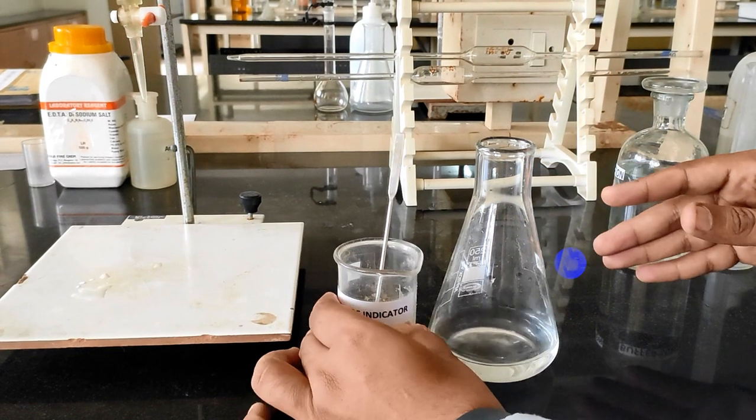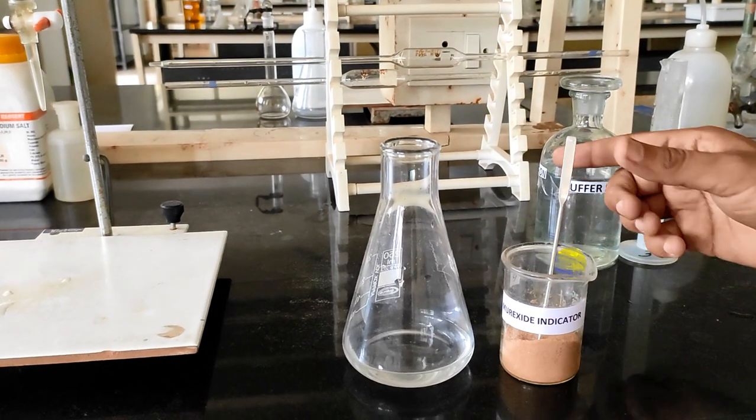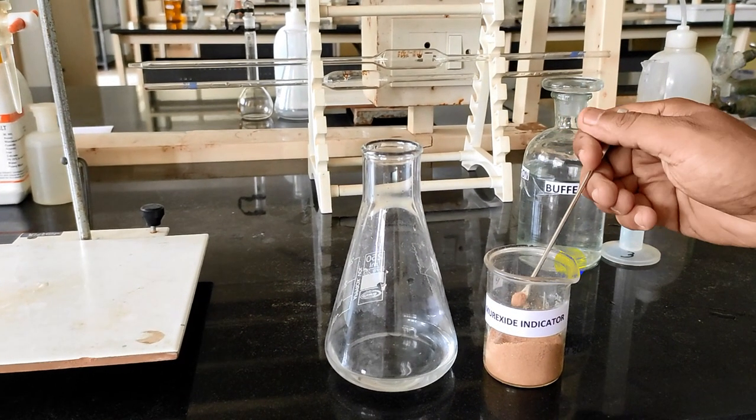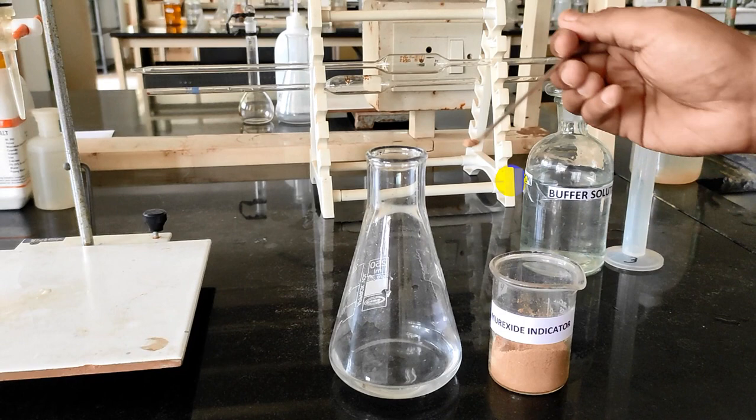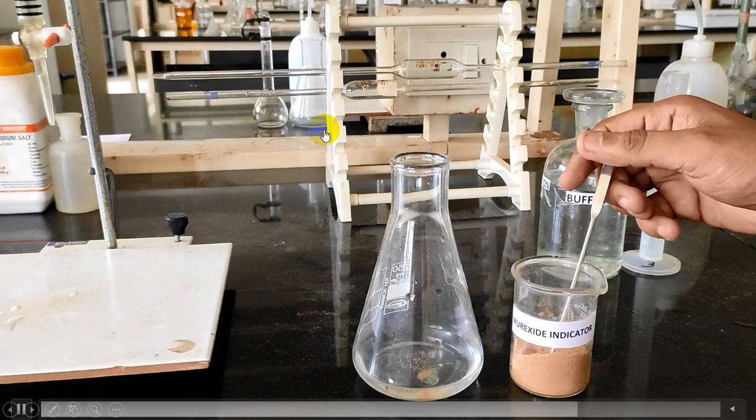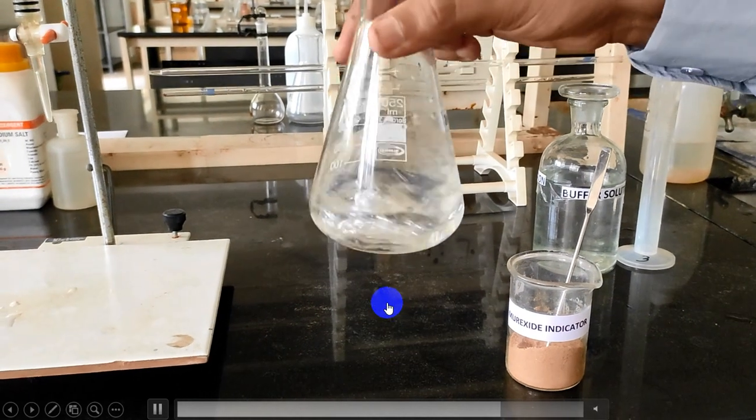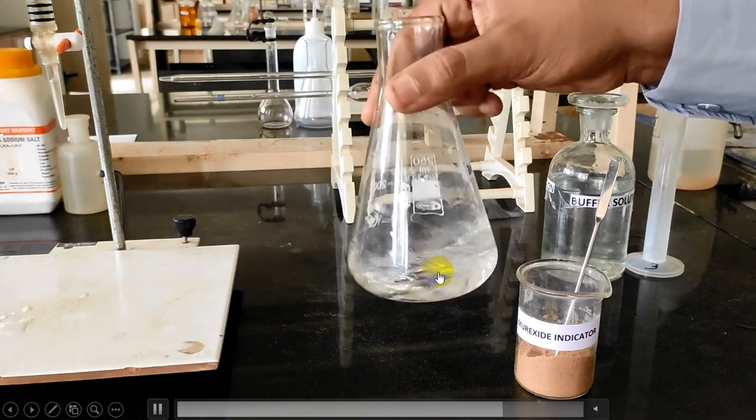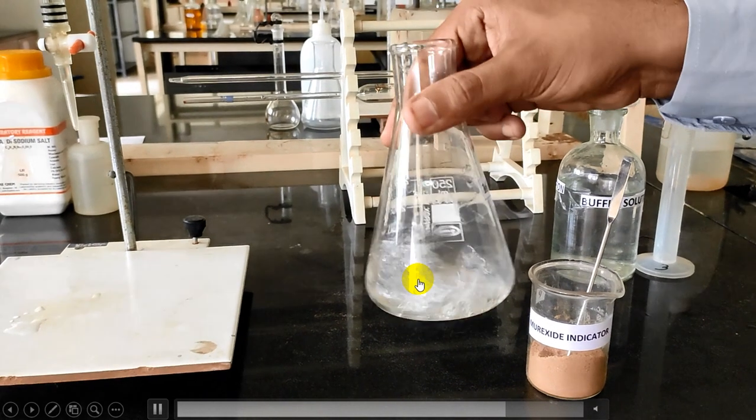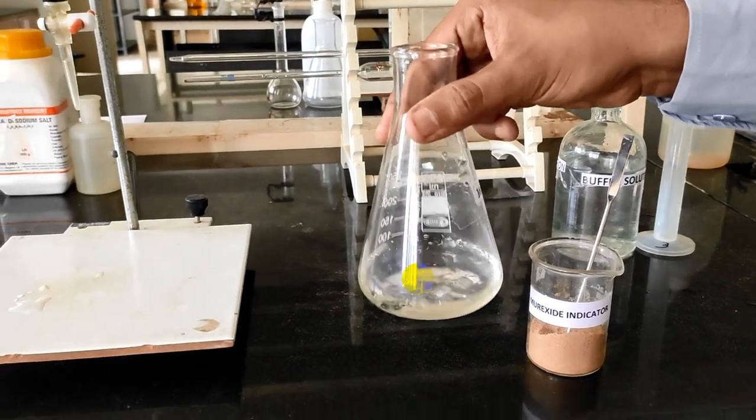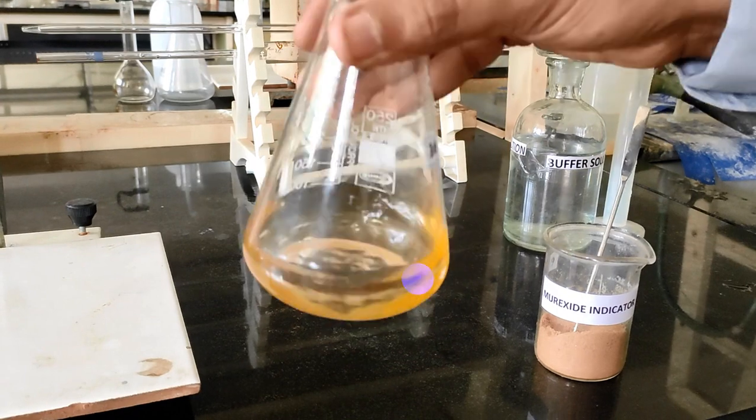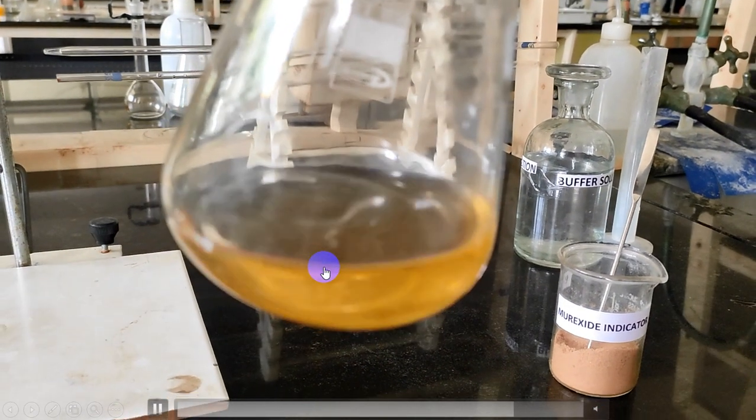Now add indicator. A pinch of muroxide indicator is added. The solution becomes yellow color. This is due to the reaction and complex formation between the nickel salt and the muroxide indicator. This is your yellow color.